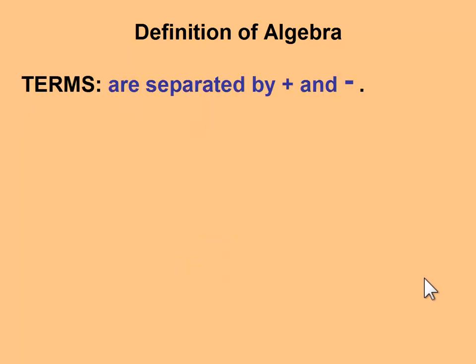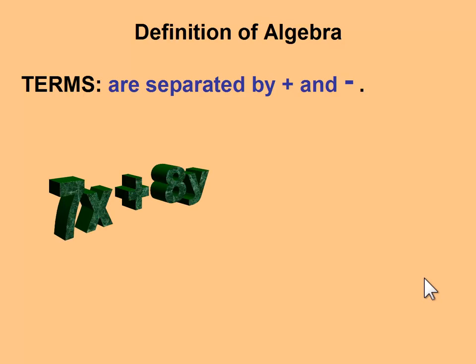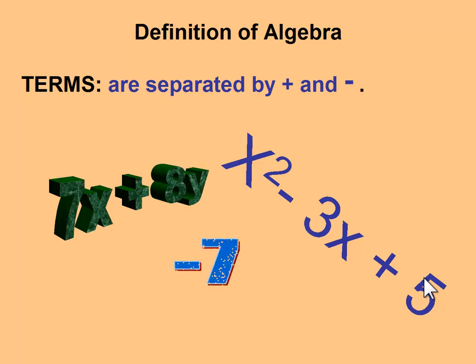Terms in an algebraic expression are separated by plus and minus signs. If we look at our examples again, 7x plus 8y is an algebraic expression containing two terms. Two term algebraic expressions are called binomials. x squared minus 3x plus 5 is an algebraic expression containing three terms called a trinomial. Finally, a single term is called a monomial. In this case, because there's no variables or letters with this term, it is also called a constant term.